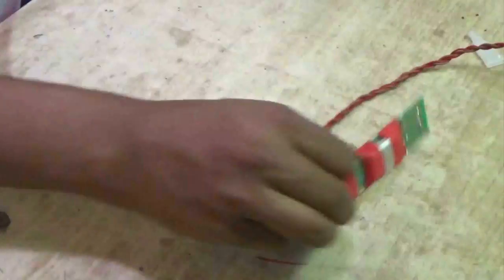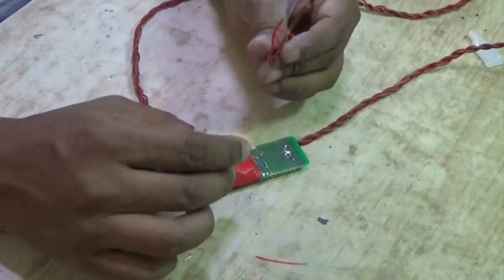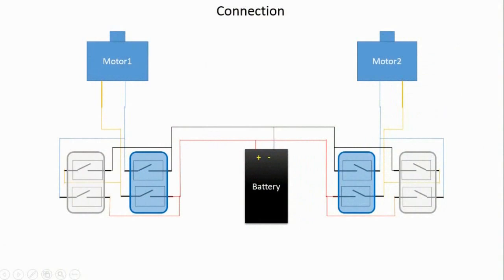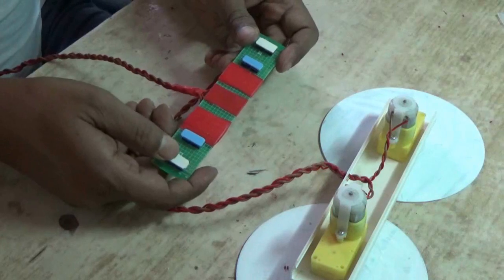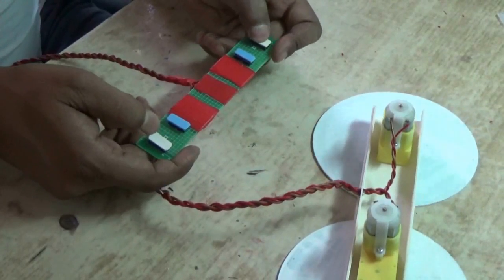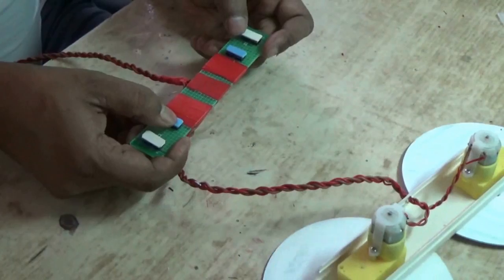Now solder the wires. Here is the connection. When the blue switch is pressed the motor will rotate anti-clockwise. When the white switch is pressed the motor will rotate clockwise. Toggle the power between motors to have a forward motion.